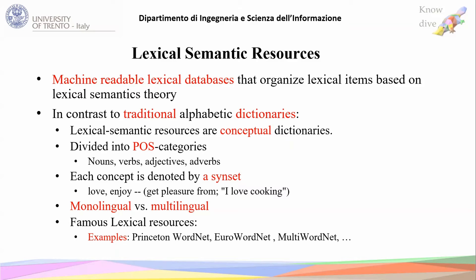Also, each concept is denoted by a sense-set. For example, a sense-set includes two lemmas, 'love' and 'enjoy,' with a gloss. The gloss is 'get pleasure from,' and an example sentence is 'I love cooking.' Lexical semantic resources in general are divided into two categories: monolingual and multilingual.